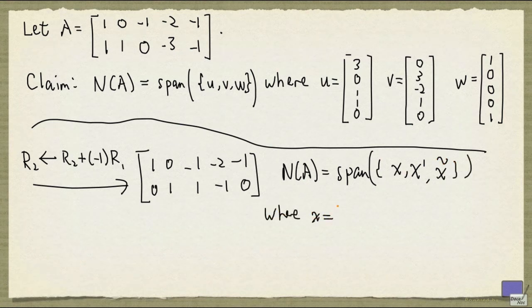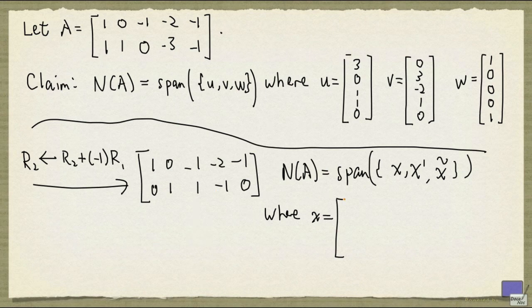Where x is given by... Well, I can set this to 1 first and solve for the pivot variables. So in this case, I'm going to get 1, minus 1, 1, 0, 0.